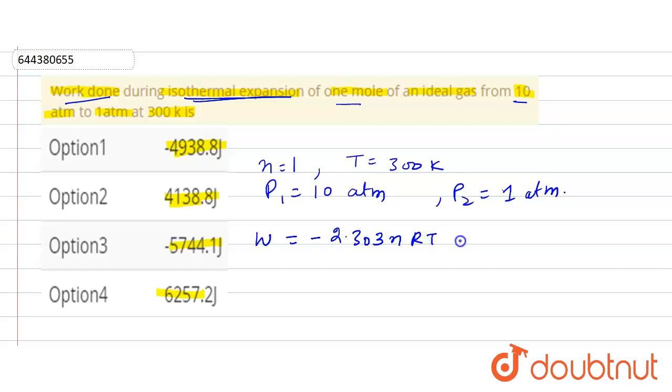So here n we have given is 1, R's value is 8.314, and T's value we have given in the question, and P1 and P2's values we have already given in the question. So here in the formula, W is equal to 2.303, n value is 1, multiply by 8.314.